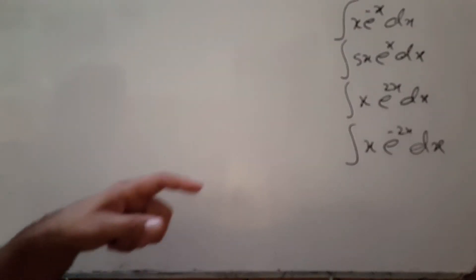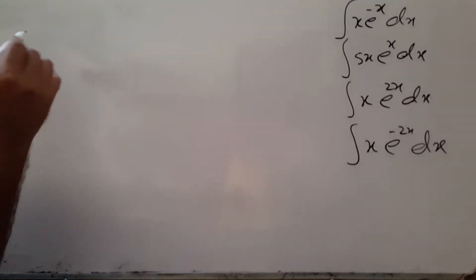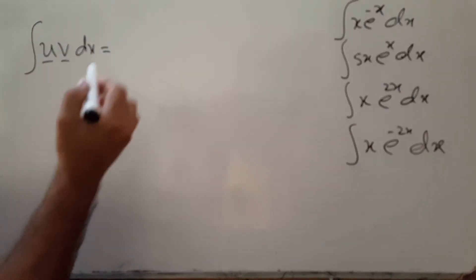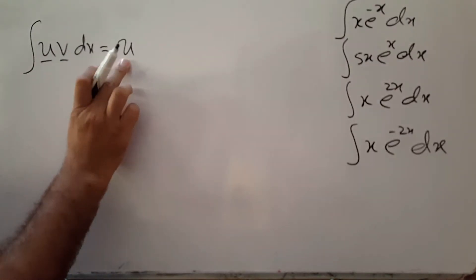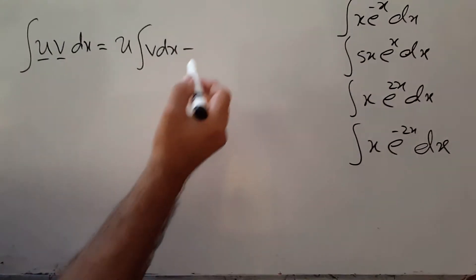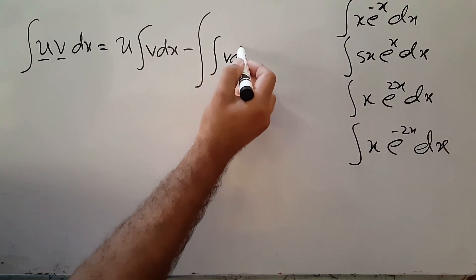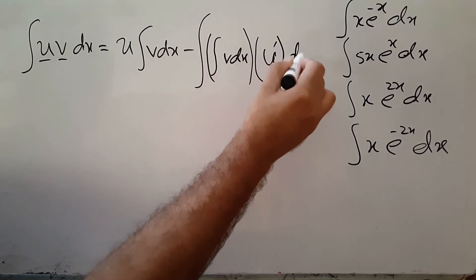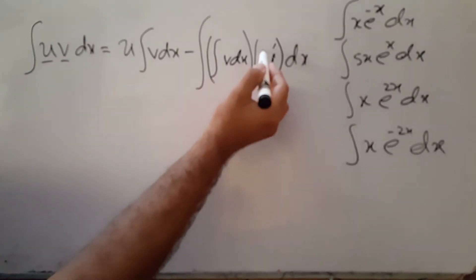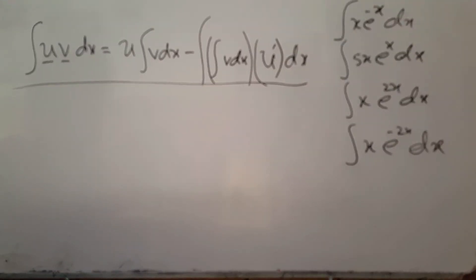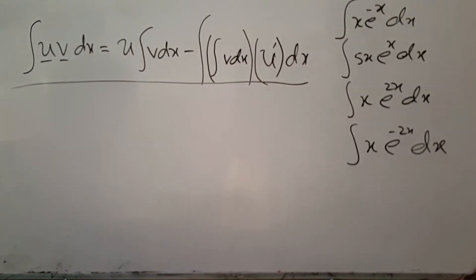Integration by parts: the formula is that you have two functions, U and V. You choose a function U which you can differentiate, and V goes to integration with respect to x. The formula is: integral of U times V dx equals U times integral of V dx minus integral of (derivative of U times integral of V dx) dx. This is why we choose U and V carefully.